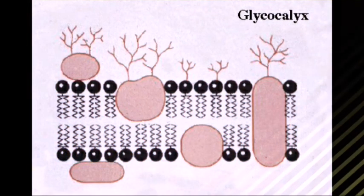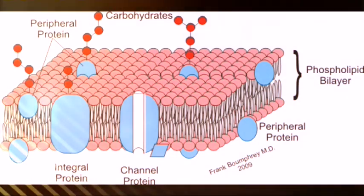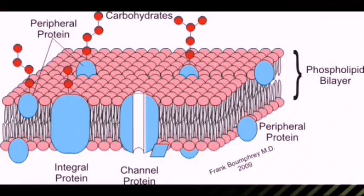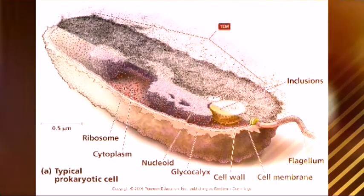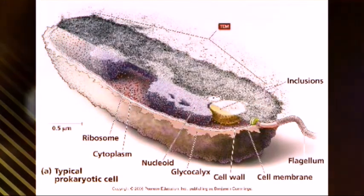Most animal epithelial cells have a fuzz-like coat on the external surface of their plasma membranes. This coating consists of several carbohydrate moieties of membrane glycolipids and glycoproteins, which serve as backbone molecules for support.